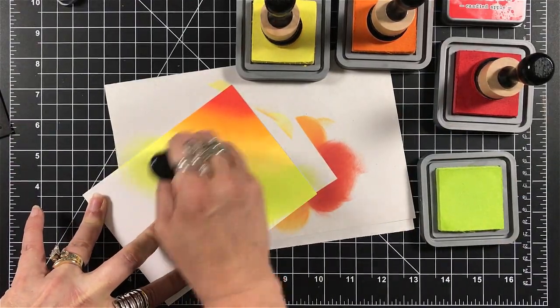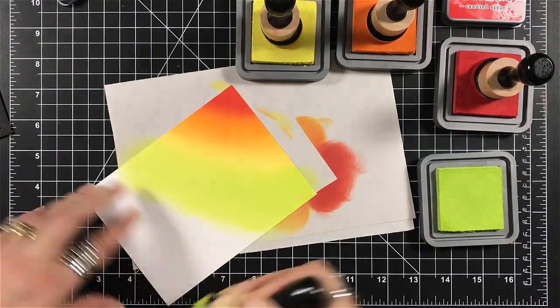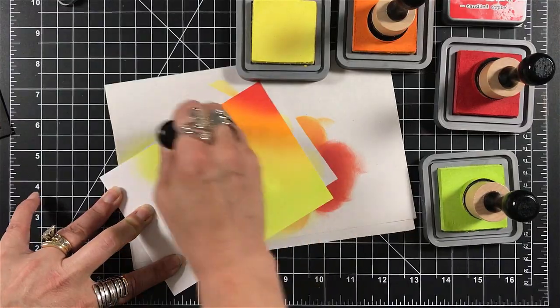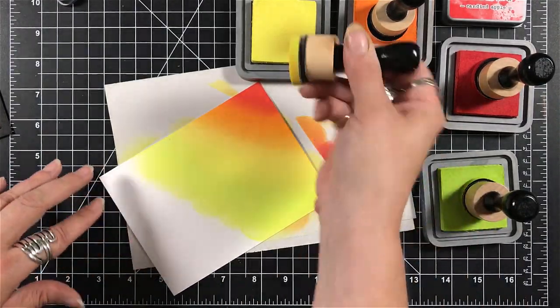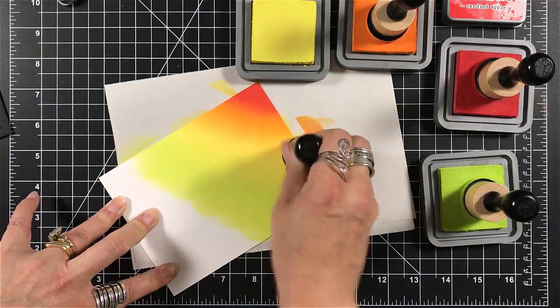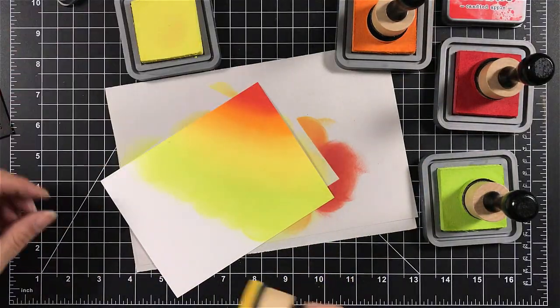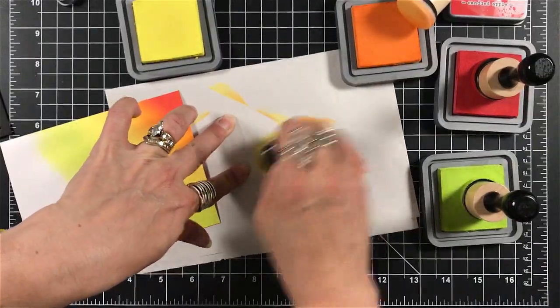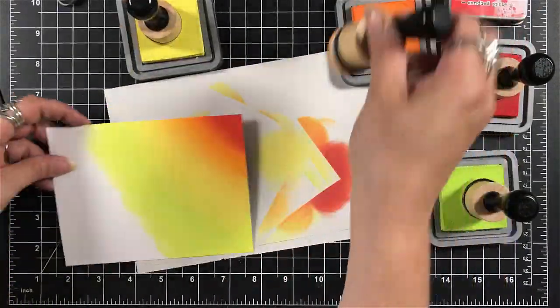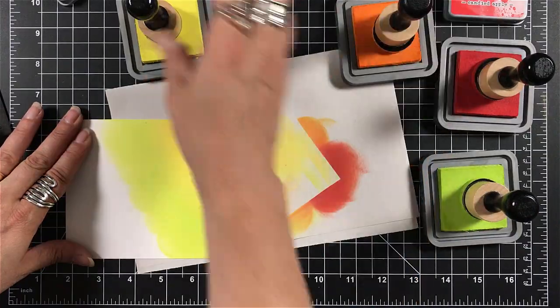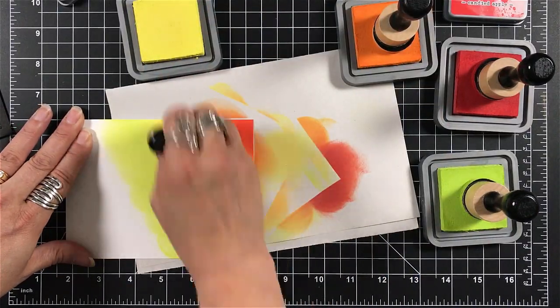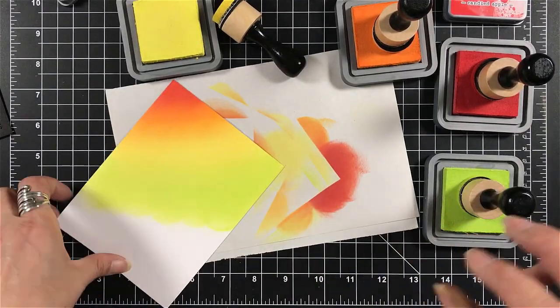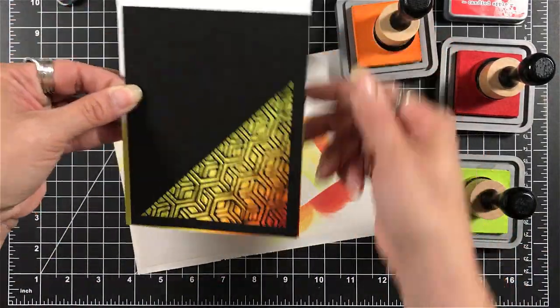So the final color that I'm pulling in here is my twisted citron. And the one thing that I, or I love many things about the oxides, let's be honest. If you've seen my previous videos, let's be honest. But the main thing is these blend like butter. It is absolutely wonderful. If you feel you have trouble with blending with the regular Distress inks, this will solve your problem. Just know that the colors are slightly different because of the makeup of the oxides.